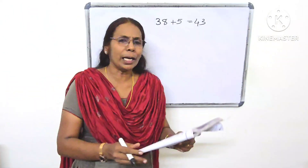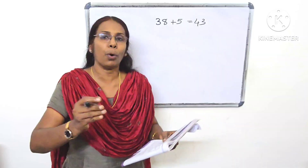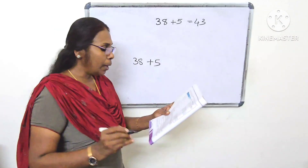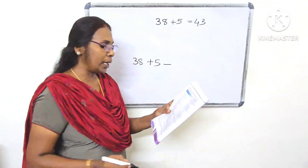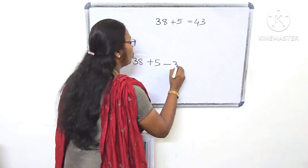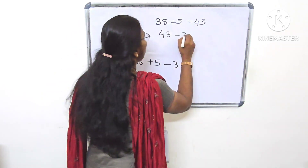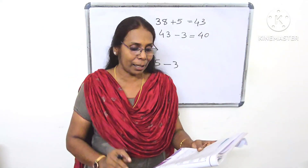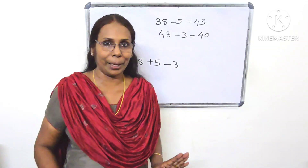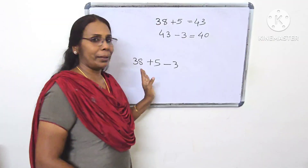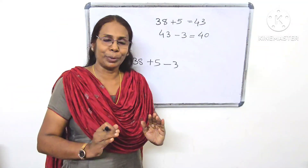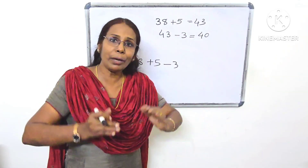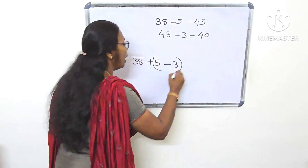This is the question. You have 38, then 5, then 3. How many are in the class? If you need 3, then what do you do? Do you add or subtract? How many are in the class now?